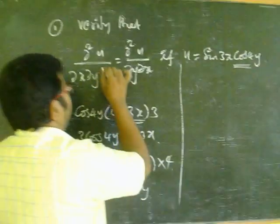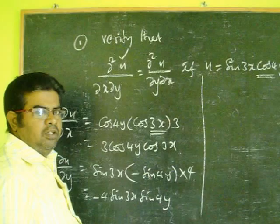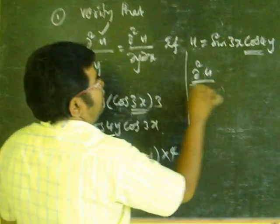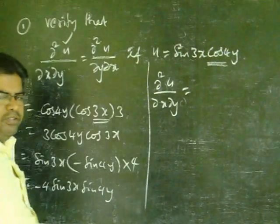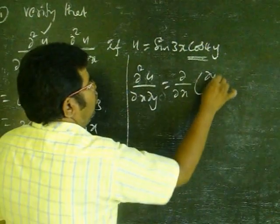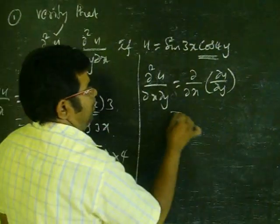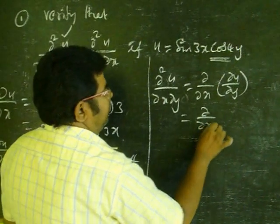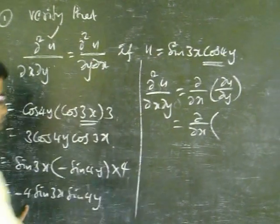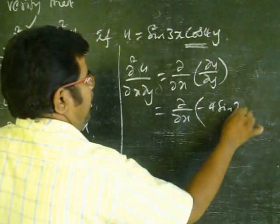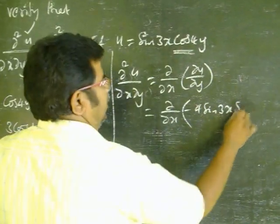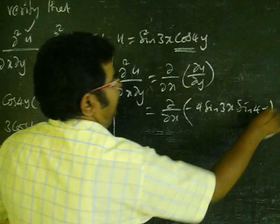Next we find the left-hand side. What is the left-hand side? ∂²u/∂x∂y. That is, ∂²u/∂x∂y equals ∂/∂x of (∂u/∂y). So, ∂/∂x of — what is ∂u/∂y here? We have found ∂u/∂y = minus 4·sin(3x)·sin(4y).